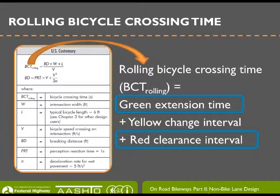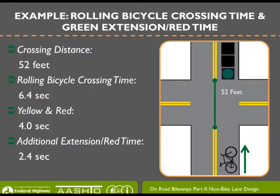The second scenario is the rolling bicycle — a bicyclist approaching the intersection on a green indication. This is used to determine clearance times and is based on a decision point where cyclists decide whether to stop or proceed. The rolling bicycle crossing time is determined using braking distance plus crossing distance and cyclist speed. The braking distance includes reaction time and the distance required to stop. Example: with a 52-foot crossing distance, rolling bicycle crossing time is 6.4 seconds; with yellow and red of 4 seconds, an additional red extension of 2.4 seconds is needed.